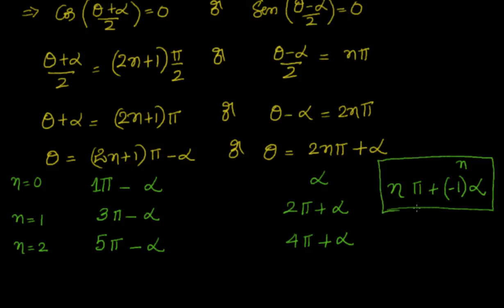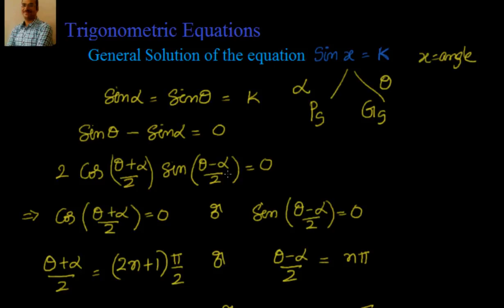Verifying: n=1 gives π − (−1)^1·α = π − α; n=0 gives α; n=2 gives 2π + α. All values are recovered. So the general solution of sin x = k is n·π + (−1)^n · α. You don't need to use sum-to-product transformations if you simply remember this formula.